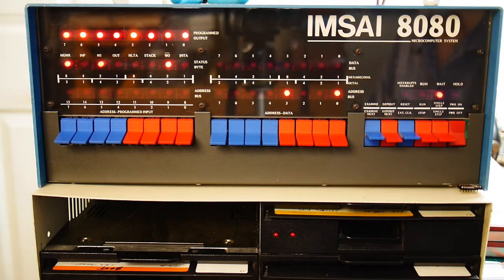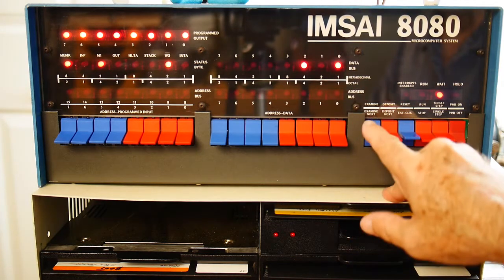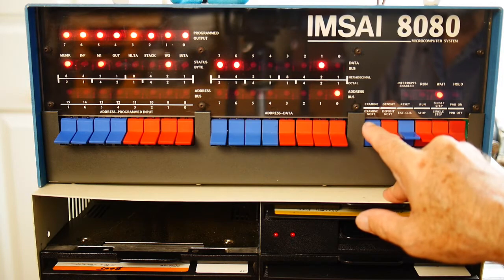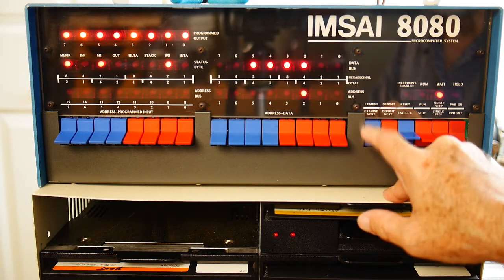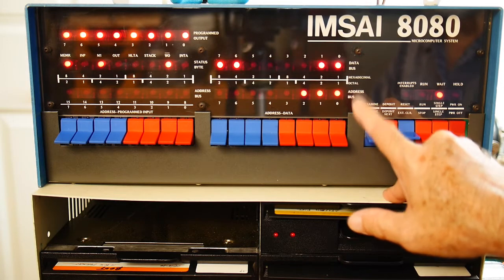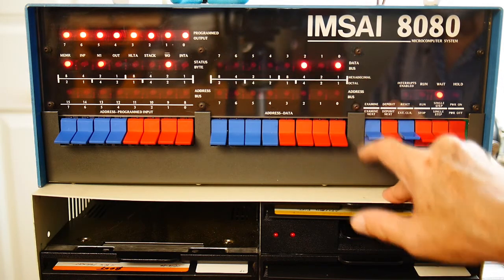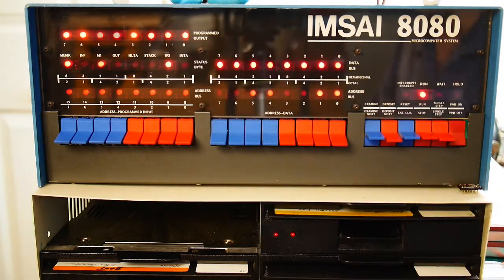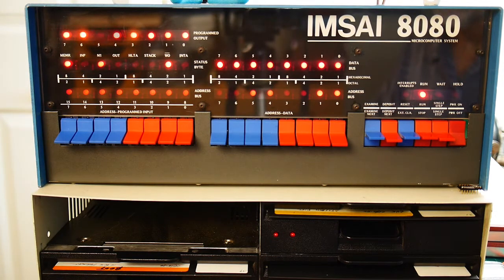So let's take a look at our program. Decrement B, jump not zero to 0, 0. Increment A, output to FF, jump to 0. And here we go. So by adding the delay instruction, we can slow it down.